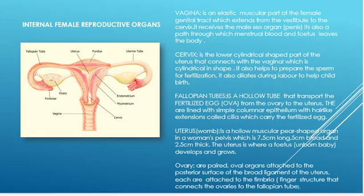The fimbriae are finger-like projections that help capture the oocyte once it is released from the ovary. The ovaries are paired, oval-shaped organs that attach to the posterior surface of the uterus by the broad ligaments. The ovaries secrete hormones vital to reproduction — estrogen and progesterone — and also produce the eggs, known as oocytes. Without these eggs, fertilization and formation of the fetus cannot occur.